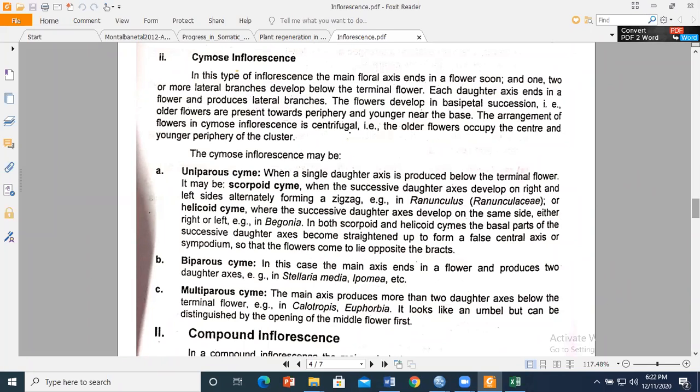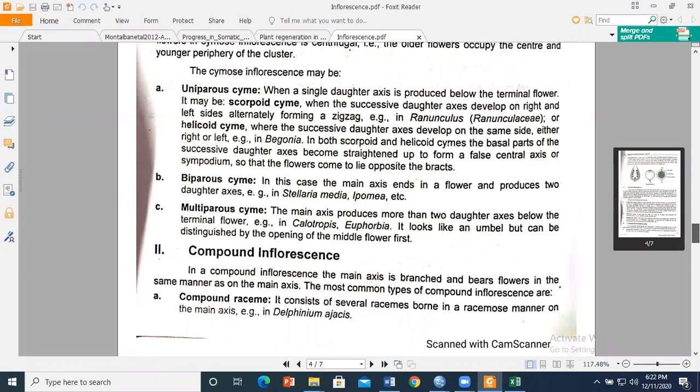In helicoid cyme, successive daughter axes develop on the same side, either right or left. In both scorpioid and helicoid cymes, the basal parts of the successive daughter axes become straightened up to form a false central axis or sympodium, so that the flowers come to lie opposite to each other.